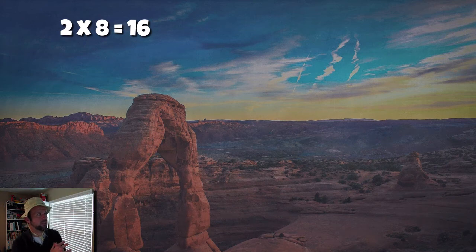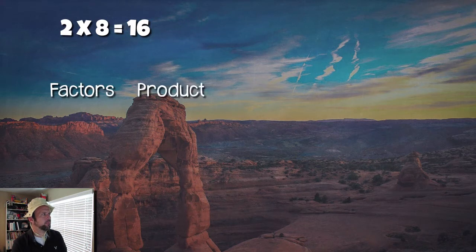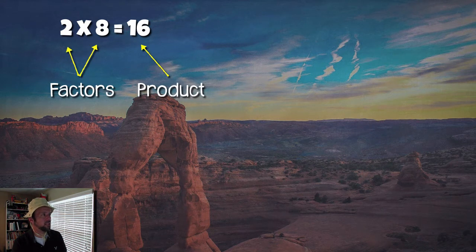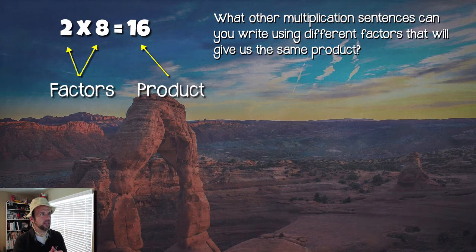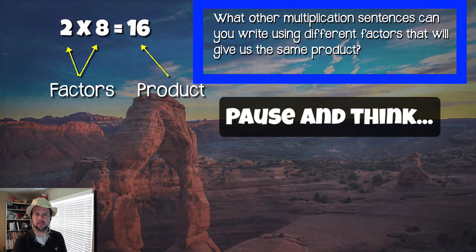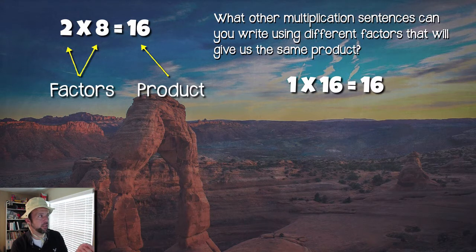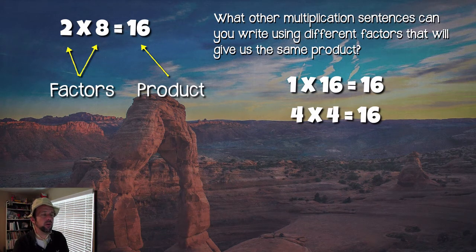Ah, this is better — so much warmer. We're in a desert now looking for more factors or arrays or multiplication sentences. Look, off in the distance, there is a 2 times 8 equals 16. We've got a multiplication sentence. What are the factors of this multiplication sentence? Our factors are going to be 2 and 8, and our product is going to be 16. What other multiplication sentences can we write using different factors that will give us the same product?